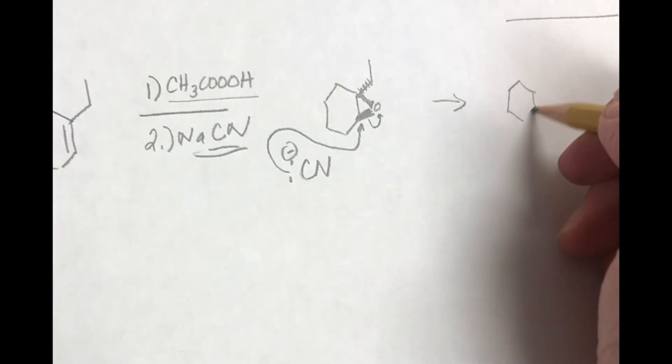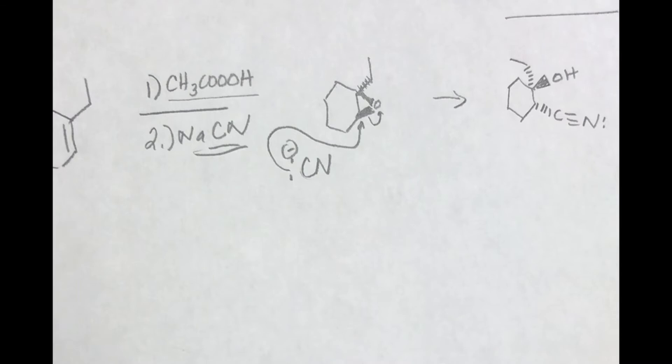And so I'll show you this way. So our CN, which actually looks like this, is going to be opposite where our OH is. And so that is the product of this reaction.